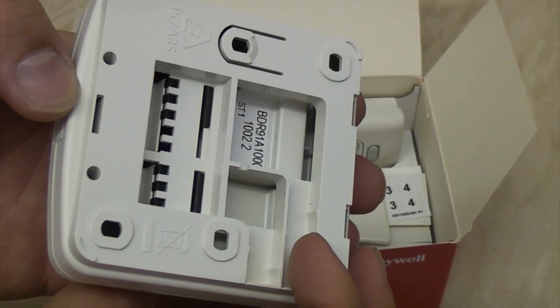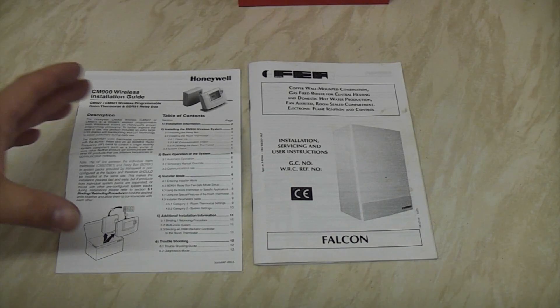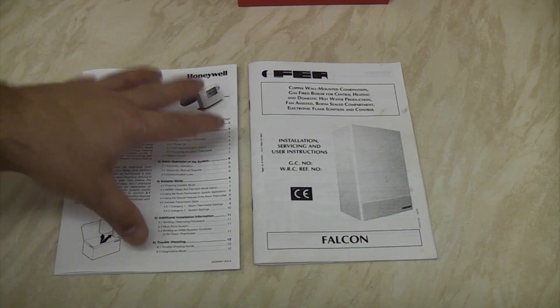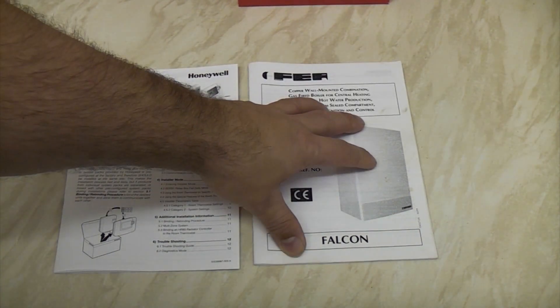It is pretty simple to connect. There are only actually four wires. So before you do anything, you need to have a look at the manuals. So this is the one that came with the thermostat, and that is the manual for the boiler.